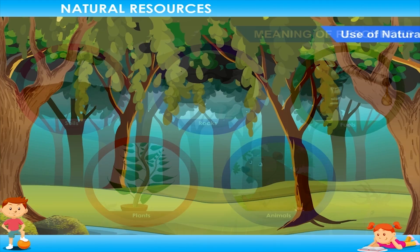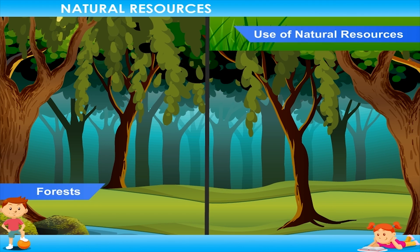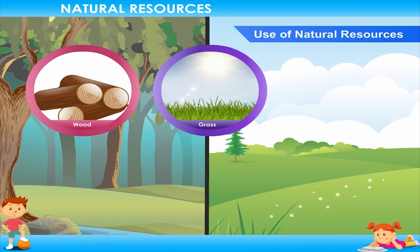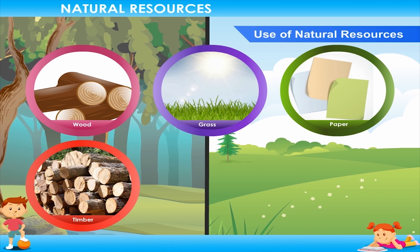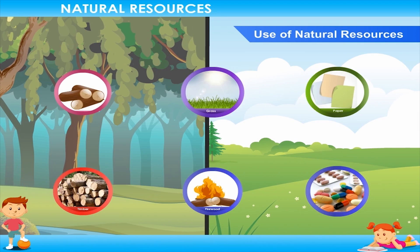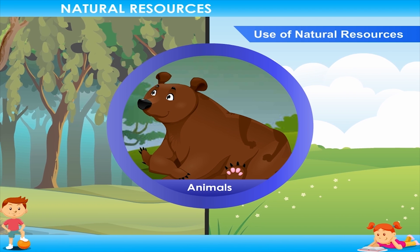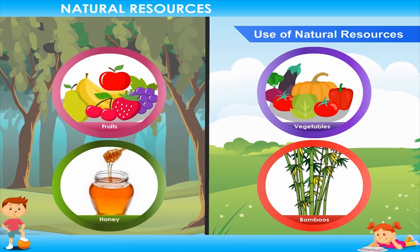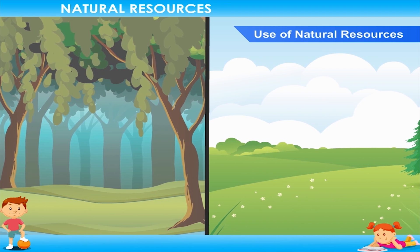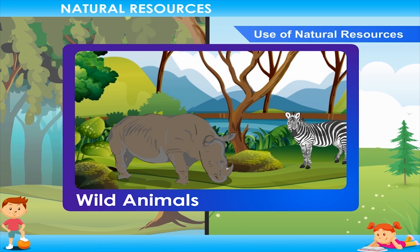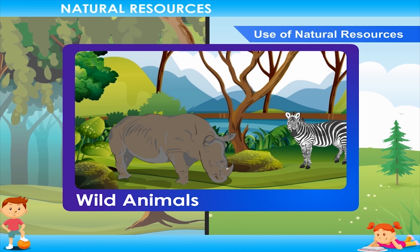Use of natural resources: Forests and grasslands are natural resources that are helpful in many ways. They provide us wood and grass to make paper. We also get timber, firewood and medicines. People use the farms to graze animals in forests. Forests also provide us fruits, vegetables, honey, bamboos and other things. Forests and grasslands provide a natural home to wild animals. They also protect the soil from erosion and help plants to hold firmly in the soil.